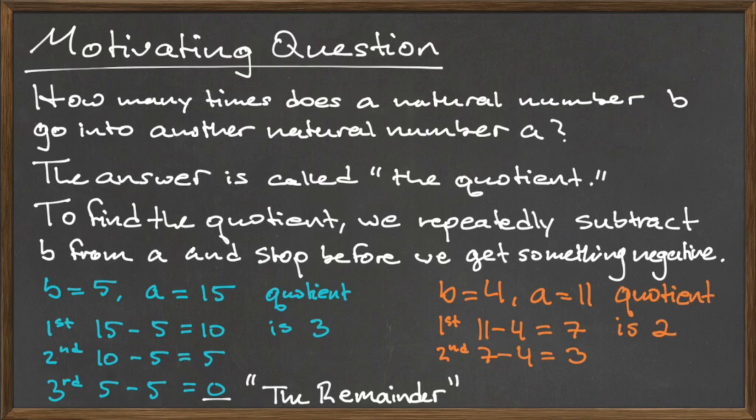The number left over at the very end of our list is 3, which is the remainder. So, the division of 11 by 4 is 2 with remainder 3.